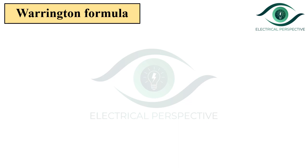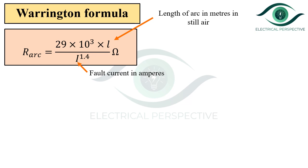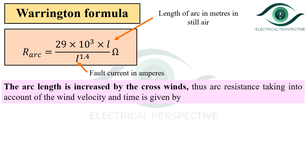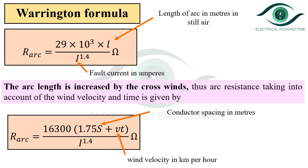The arc resistance is given by the Warrington formula. Here, L is the length of arc in meters in still air — meaning the air is stationary with no motion — and I is the fault current in amperes. The arc length is increased by crosswinds. Thus, the arc resistance taking into account wind velocity and time is given by a second formula, where S is the conductor spacing in meters, V is the wind velocity in kilometers per hour, T is the time in seconds, and I is the fault current in amperes.